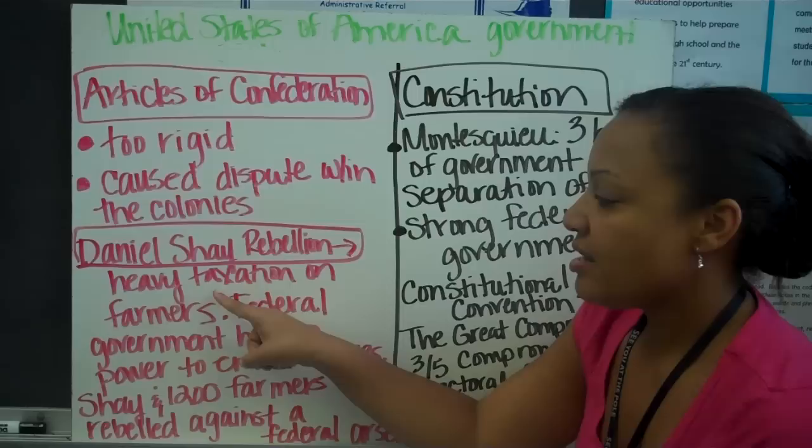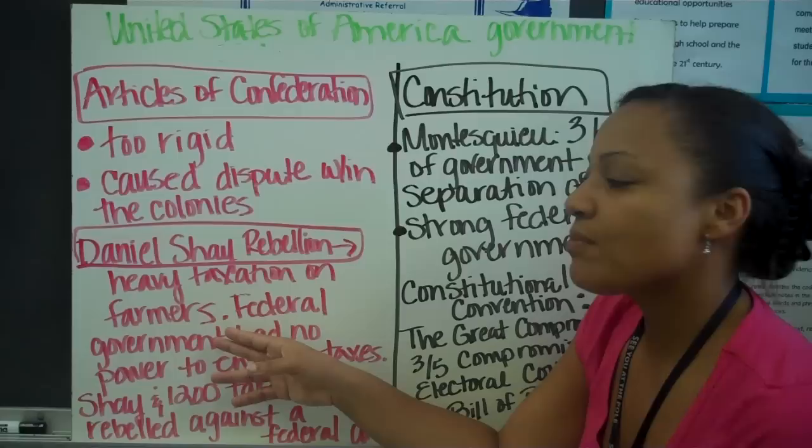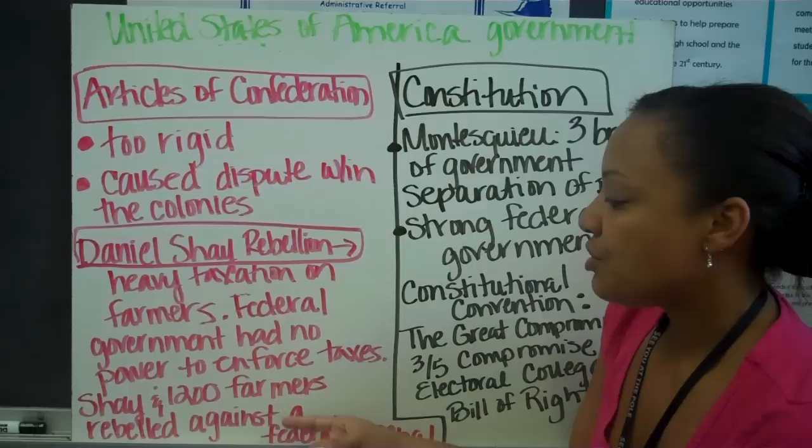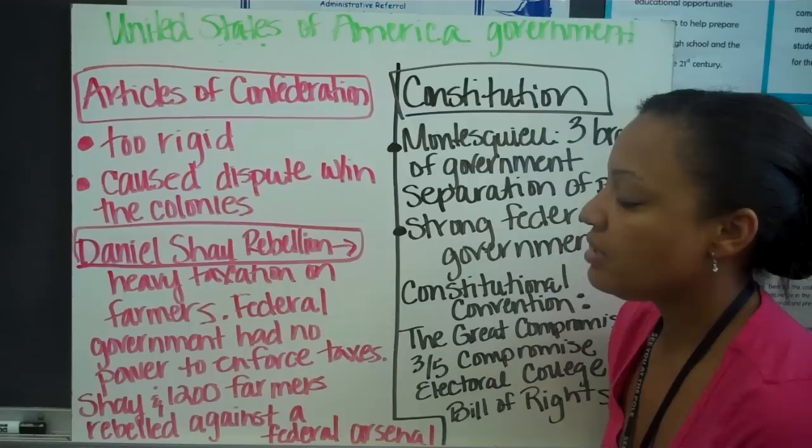It all came to a head with Shays' Rebellion — another issue of heavy taxation on farmers. The federal government had no power to enforce taxes evenly, so farmers were being heavily taxed. The farmers were upset and decided to rebel against a federal arsenal. It was 1,200 farmers led by Daniel Shays, who rebelled against the federal government demanding change.